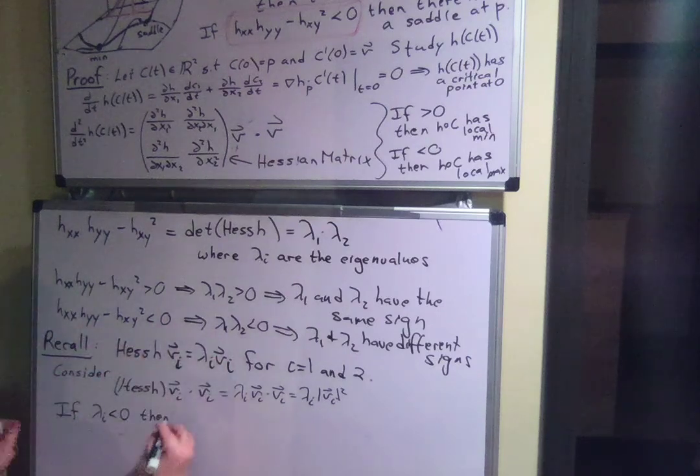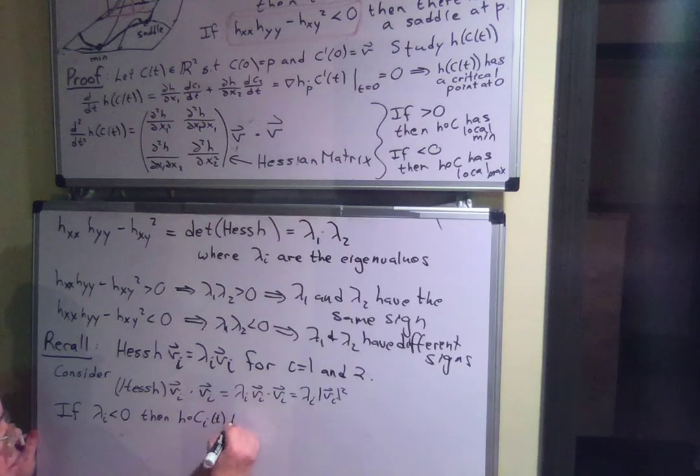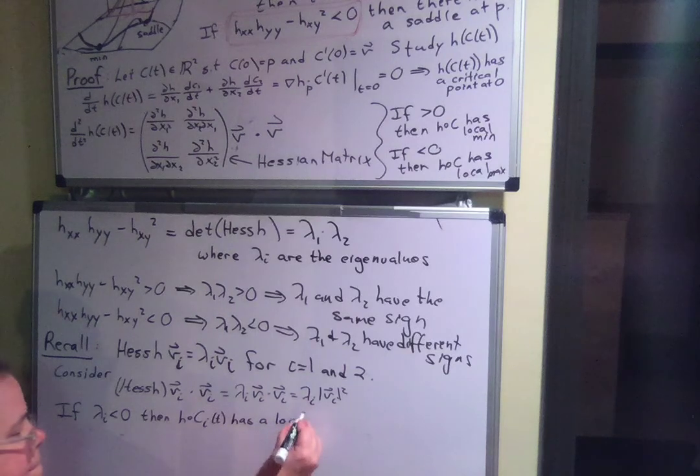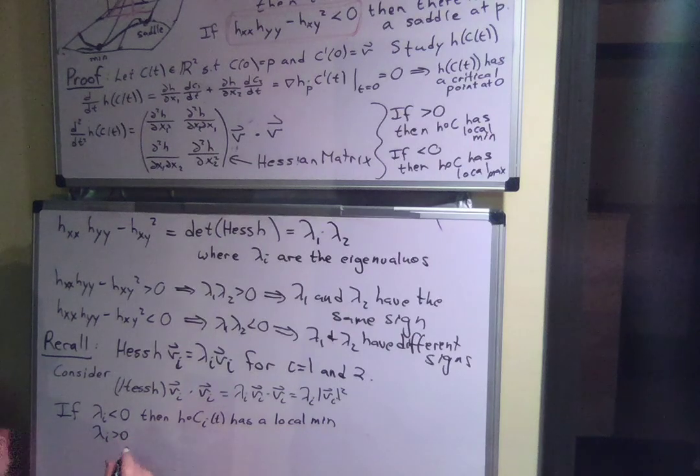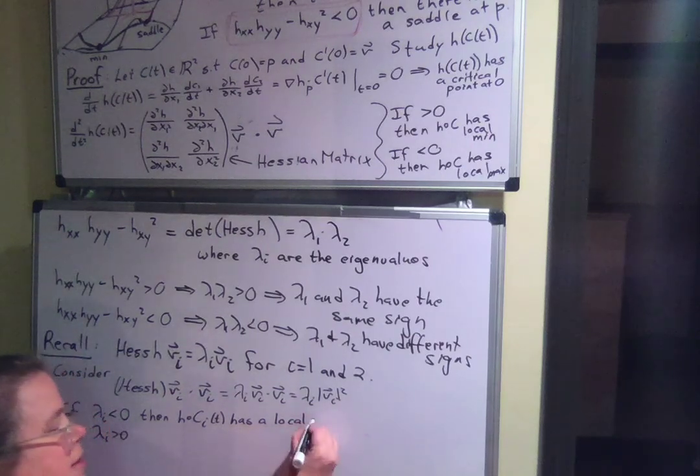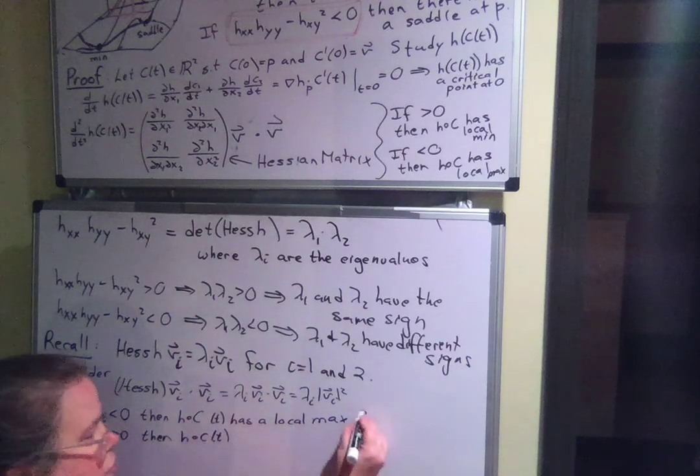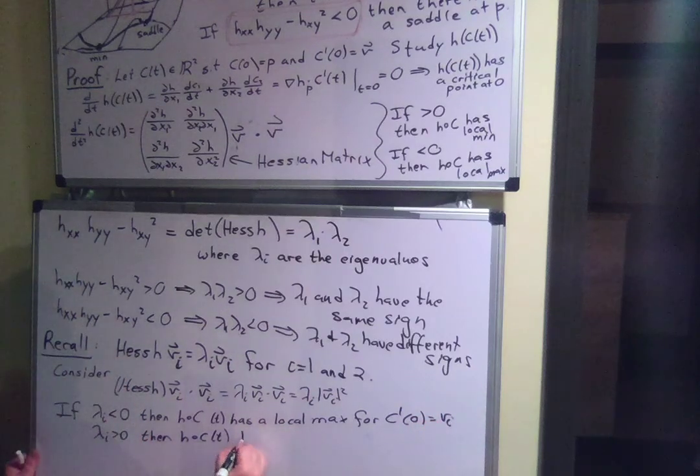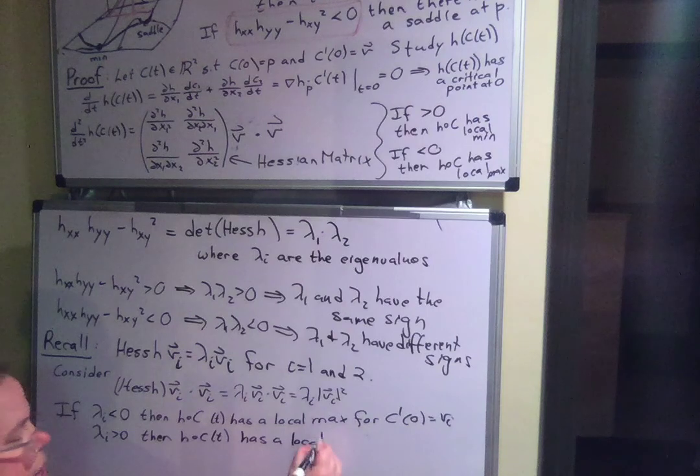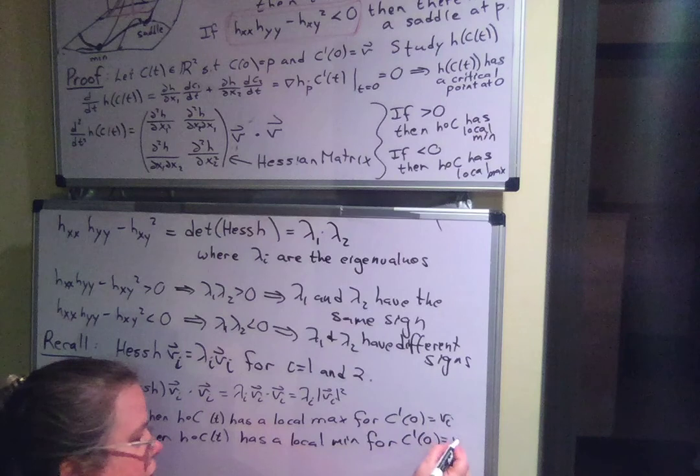Then h following c of t has a local max. And lambda i greater than 0, then h following c of t, this is for c prime of 0 equal to v i, h has a local min for c prime of 0 equal to v i.